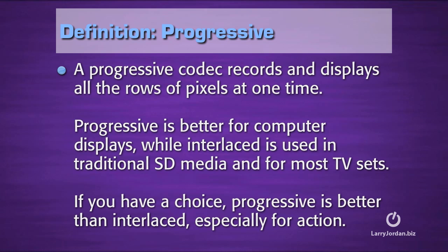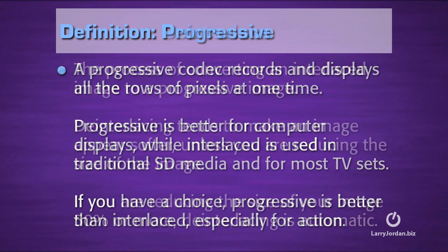A progressive codec records and displays all the rows and columns of pixels at one time. Progressive is better for computer displays while interlaced is used in traditional standard definition media and for most traditional TV sets. If you have a choice, progressive is better than interlaced, especially for action. A smaller progressive image is better than a bigger interlaced image — there's a greater degree of clarity of focus and perceived resolution in a 720p picture than in a 1080i picture.